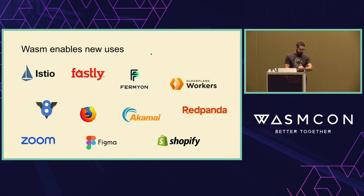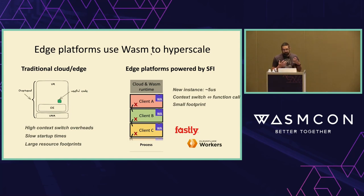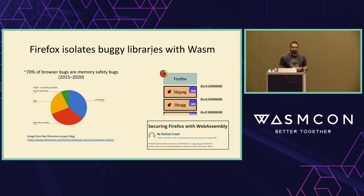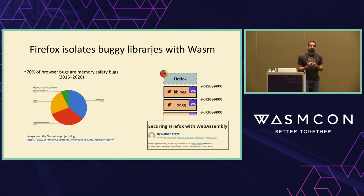Wasm enables many cool use cases because of unique properties: instance creation that is orders of magnitude lower than what you'd get on something like Lambda — microsecond scale, nanosecond scale context switches, and very small footprints. This makes it possible to do high-concurrency, low-latency edge compute platforms, like we're seeing from Cloudflare and Fastly. Another cool use case is compartmentalization of untrusted code. We've been working with Mozilla on sandboxing untrusted libraries — they depend on third-party C libraries. You may have seen the RL Box talk earlier in the week.